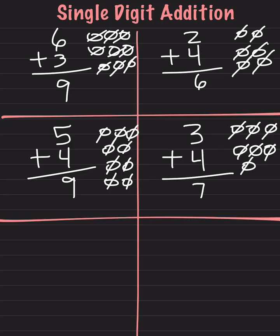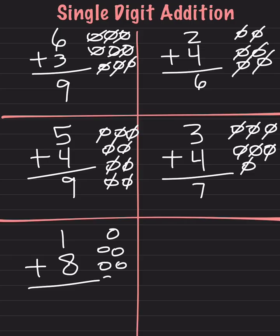Let's do another one. We'll do 1 plus 8. So we have 1 circle, now we draw 8 more circles: 1, 2, 3, 4, 5, 6, 7, 8. Now let's count together: 1, 2, 3, 4, 5, 6, 7, 8, 9.